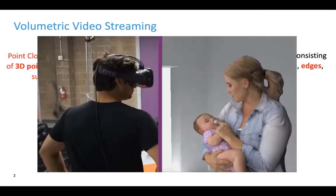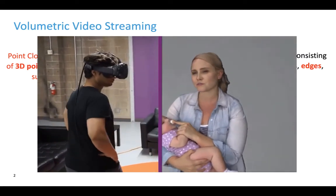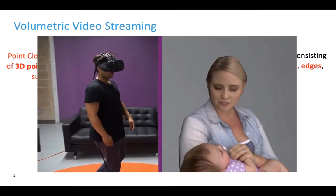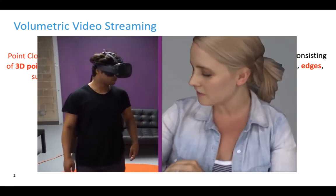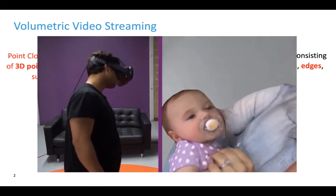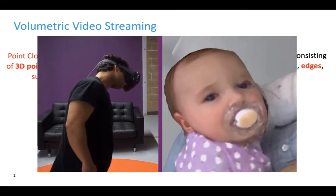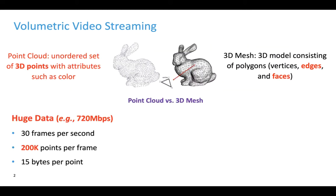Just in case you have not heard about volumetric video before, let me play a video that shows the display of a volumetric video on the right and how the rendered content changes when the viewer on the left moves in 3D space. Volumetric video streaming is challenging due to the huge amount of data we need to deliver. Here is an example video with 720 Mbps bitrate. When watching this video, we will use up 20 GB data in less than 4 minutes.